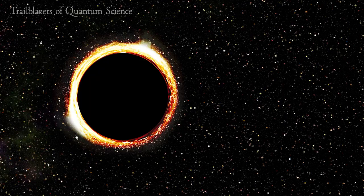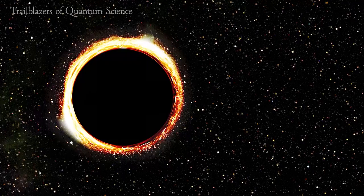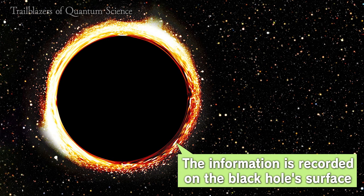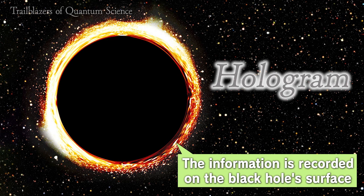In a black hole, the information on the state of the black hole itself is in fact written on its surface. And that information is displayed like a hologram. This is what has come to be understood after studies by Hawking and Beckenstein.